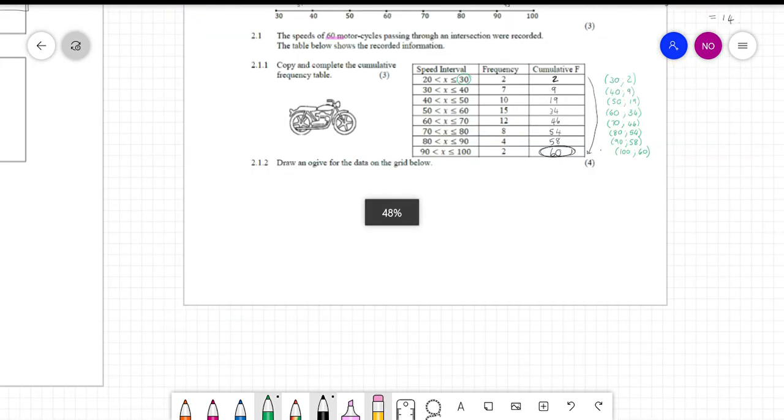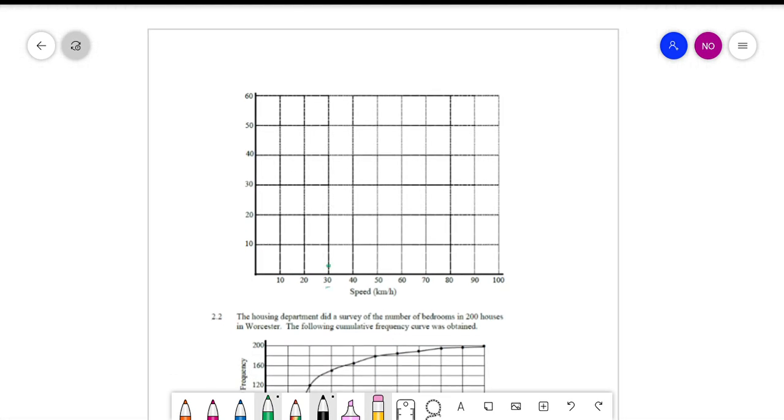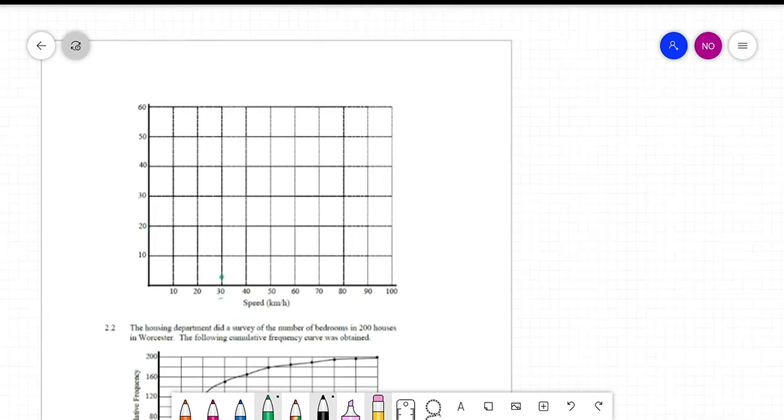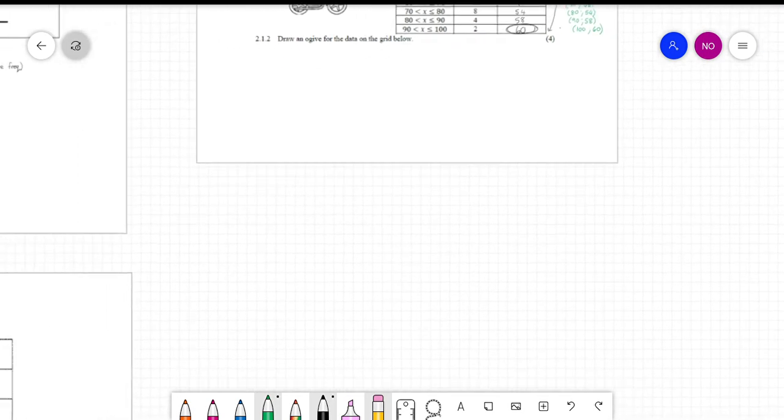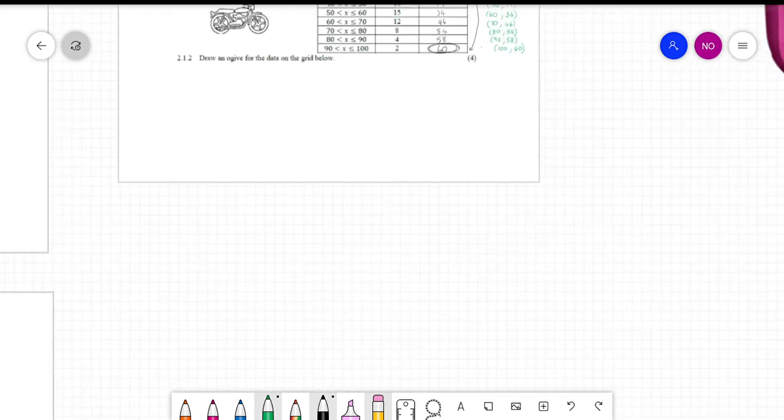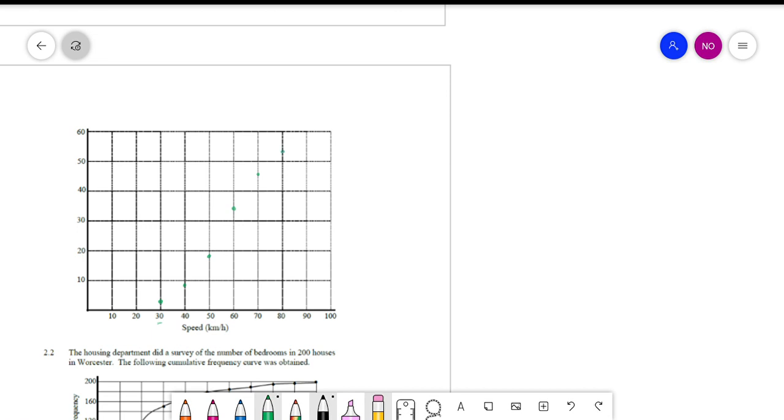And once you have those, you now go to your grid and you start plotting them. So I'm just going to zoom out. The first one is at 30 and 2, so I've got 30 here and 2 will be somewhere there. Then I've got 40 and 9, so it'll be about there. 50 and 19 will be about there. 60 and 34. Then 70 and 46, 80 and 54, 90 and 58, and the last one is at 100 and 60.